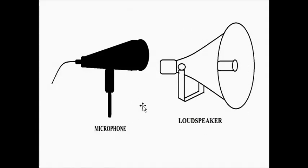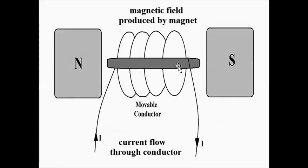Both the microphone and the loudspeaker have essentially the same internal arrangement, but the principles are reversed. For the microphone, it is Fleming's right hand rule; for the loudspeaker, it is Fleming's left hand rule. This is all about the microphone and loudspeaker, which come under transducers.